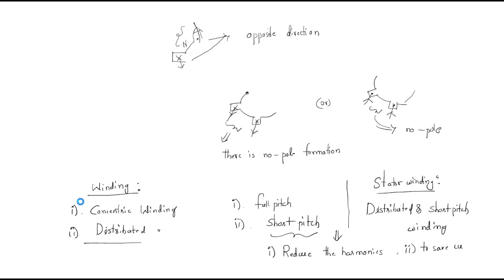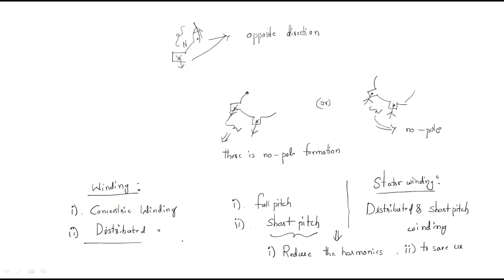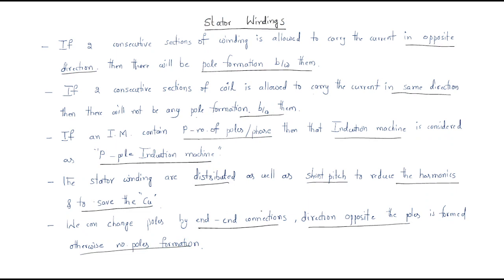Next, we can change poles by end connections. The direction of current must be opposite for pole formation; otherwise there is no pole formation. This means one coil must have current entering and the other must have current leaving — only then does the coil work as intended.